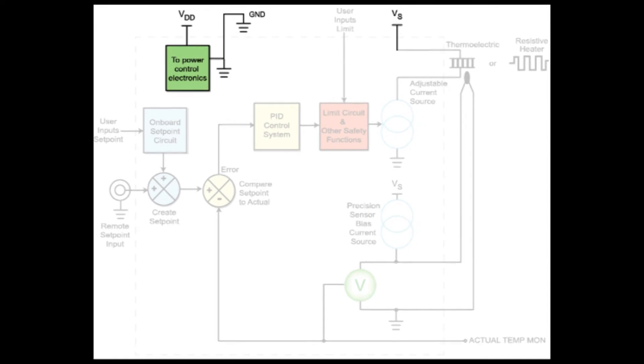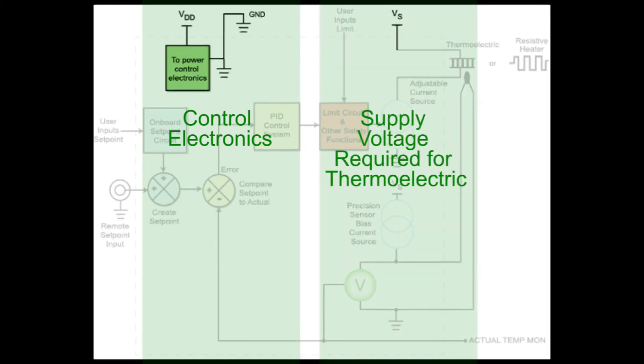In some temperature controllers, two supply voltages can be used. VDD to power the control electronics and VS to provide higher compliance voltage. Typically, VDD requires lower voltages, 3.3 to 5.5 volts, while VS is designed for higher voltages.